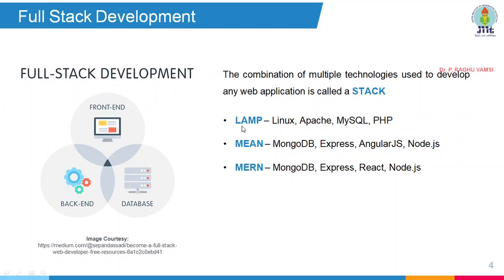LAMP is one full stack option: Linux operating system, Apache, MySQL, and PHP. There is also WAMP, which is Windows, Apache, MySQL, and PHP — the difference being the operating system. When used on Linux it is called LAMP, and when used on Windows it is called WAMP.